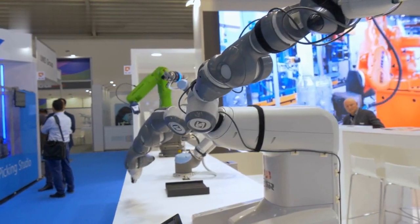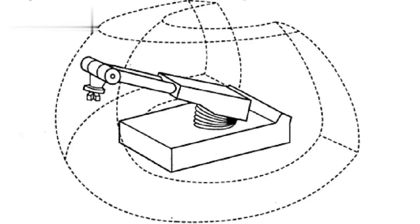Spherical work envelope. This envelope covers a sphere and is ideal for robots that need to access all directions.